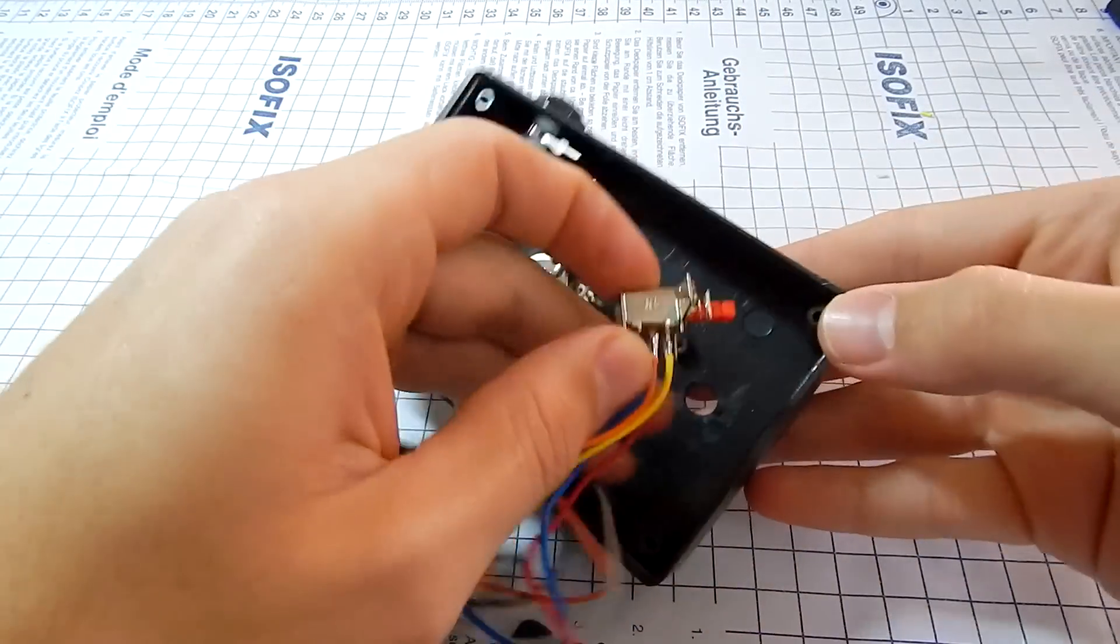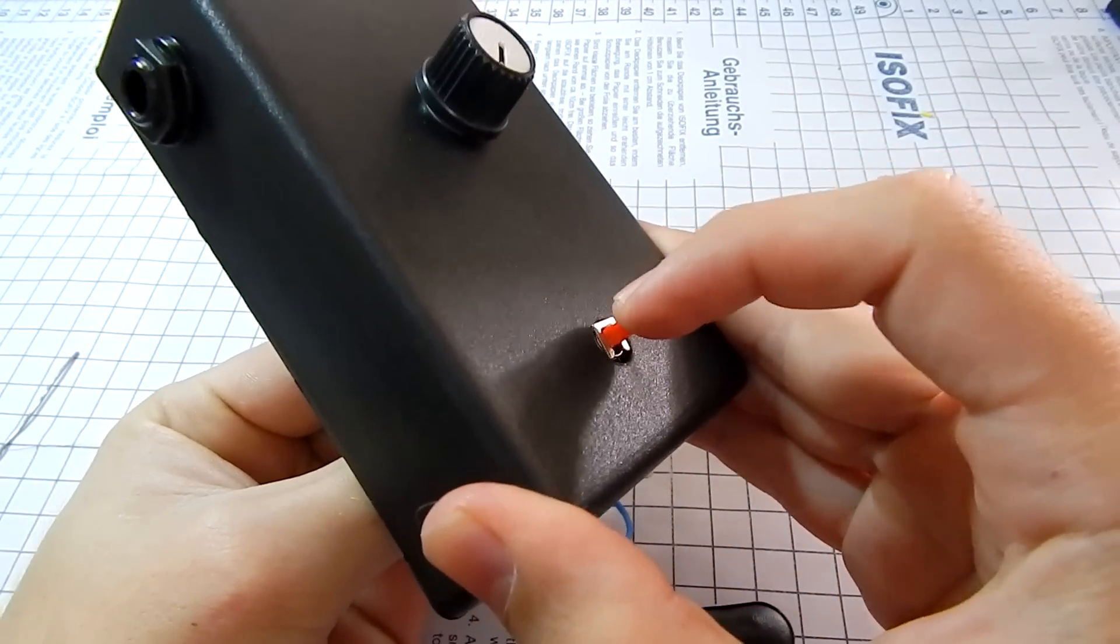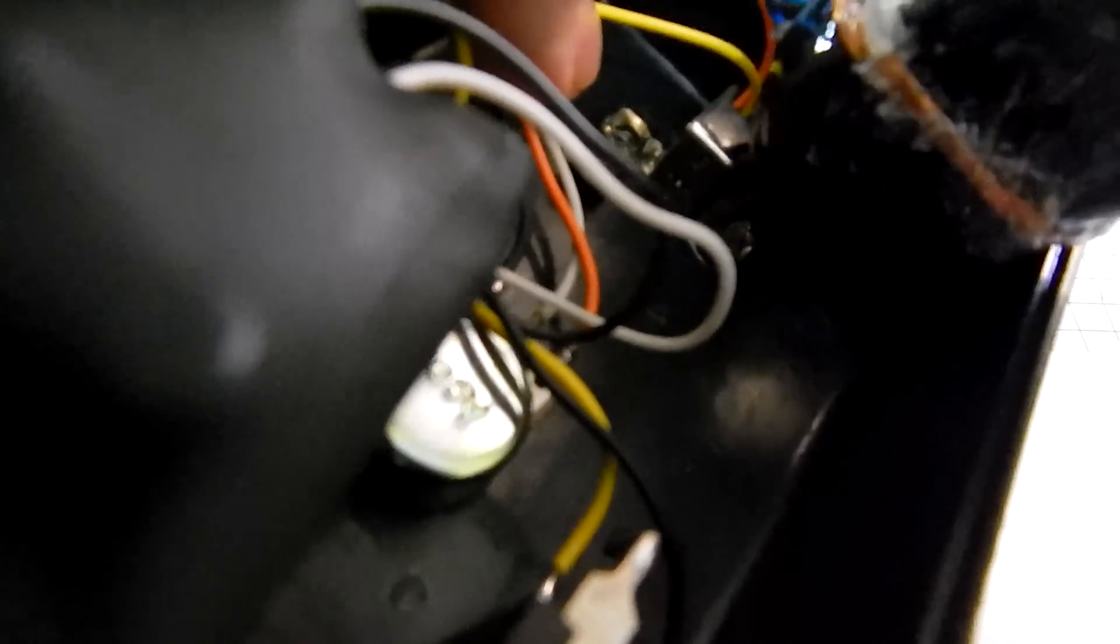Let's glue the switch with hot glue and position it so it can be activated. Reinforcing with hot glue.